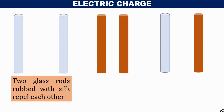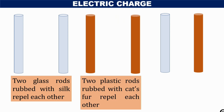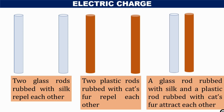Similarly, when we consider two plastic rods rubbed together, they also repel. But when we consider a glass rod rubbed with silk and a plastic rod rubbed together and place them closer to each other, they attract. That means the property that the glass rod has acquired is not the same as that of the plastic rod.